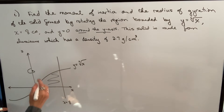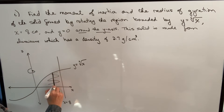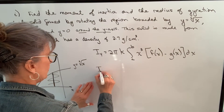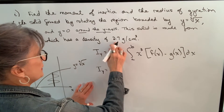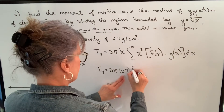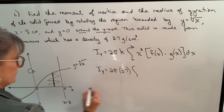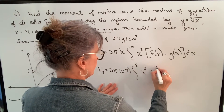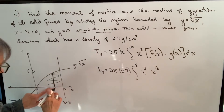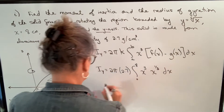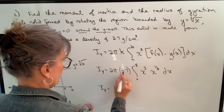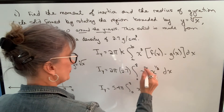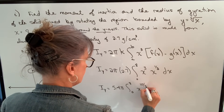So I want to find the moment of inertia first. I'm going to use the shell method — this is my formula for finding moment of inertia. I just plug in my values. k is 2.7 grams per cubic centimeter. The integral is from 0 to 8 of x cubed times f of x, which is x to the 1/3, minus g of x, which is 0, dx. So that's going to be 5.4 pi times the integral of x to the 10/3, dx — since 9/3 plus 1/3 equals 10/3.